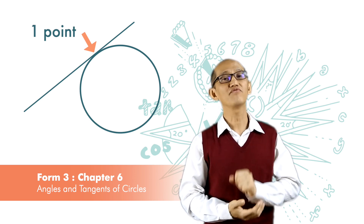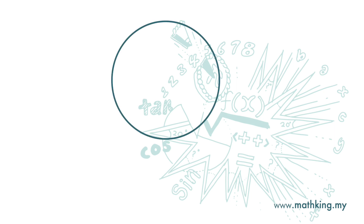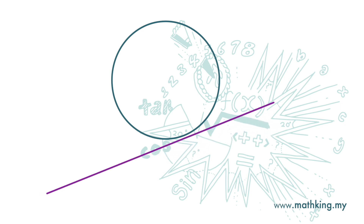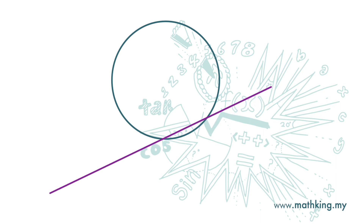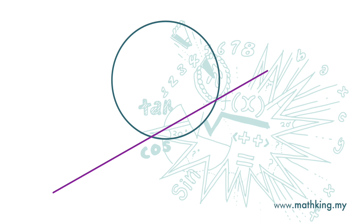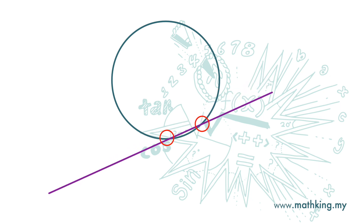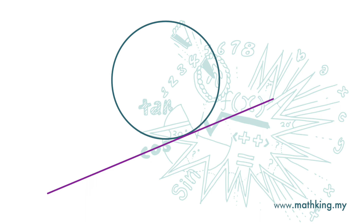Now, let's see what kind of line this is. Let's look at this line. We are going to move this line closer and closer to the circle. At this point, this line touches the circle only at one point. If we move it further, the line intersects the circle at two points. Now back to where the line touches the circle at one point.